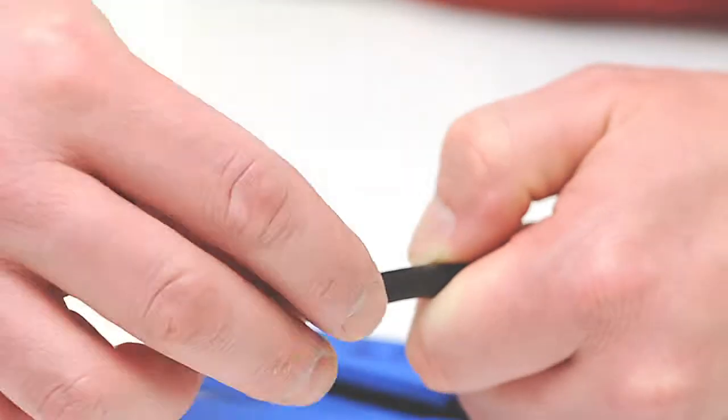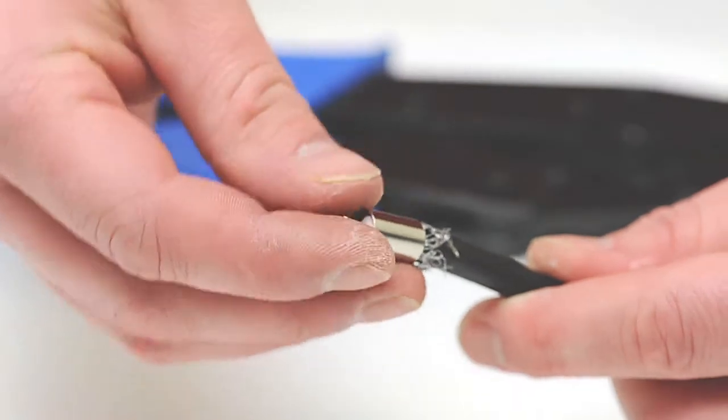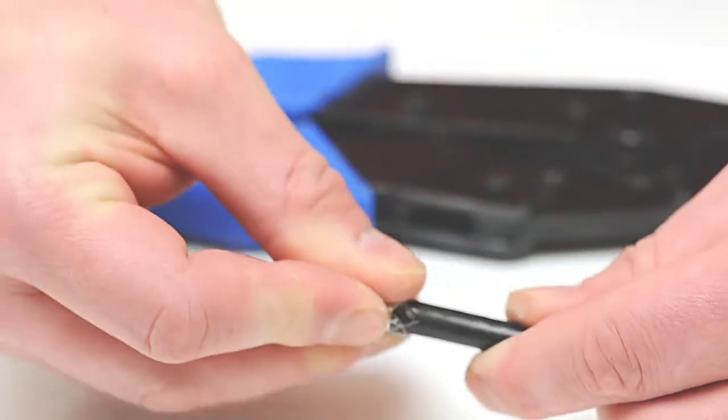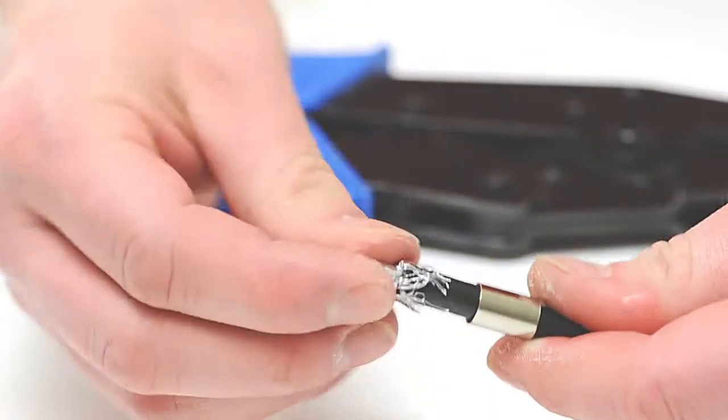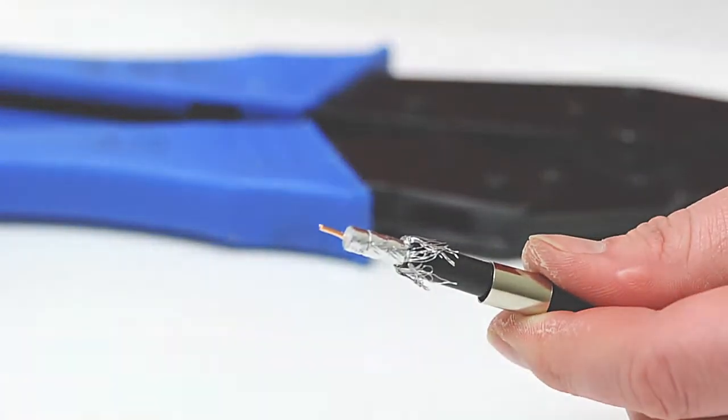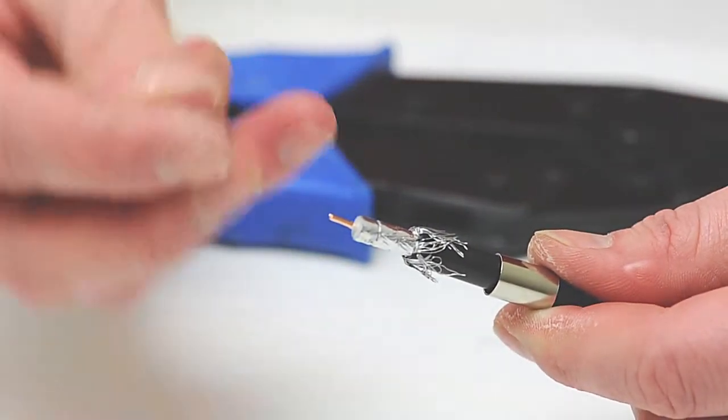Pull the braided shield on top of the jacket, slide the ferrule over the braid and the jacket. Insert the center pin onto the center conductor.